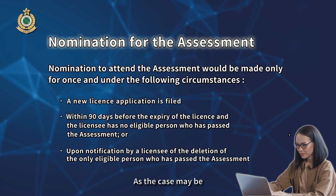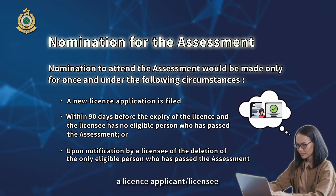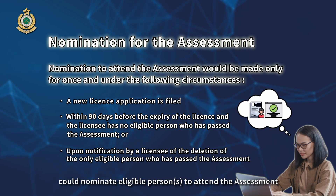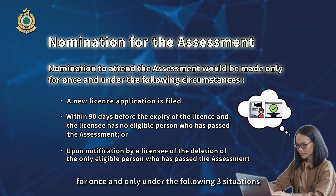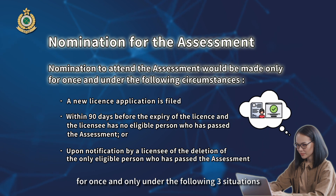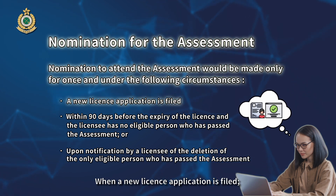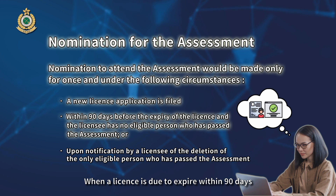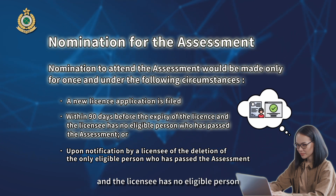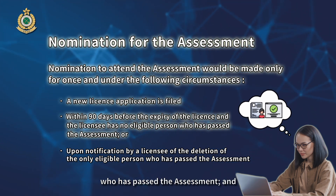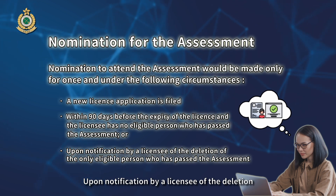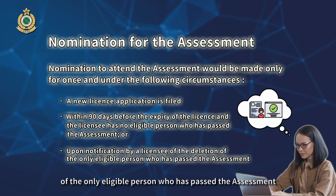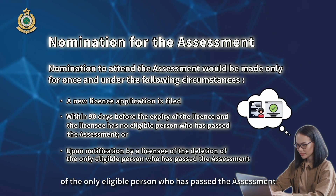A licensed applicant or licensee could nominate eligible persons to attend the assessment for once and only under the following three situations: when a new license application is filed; when a license is due to expire within 90 days and the licensee has no eligible person who has passed the assessment; and upon notification by a licensee of the deletion of the only eligible person who has passed the assessment.